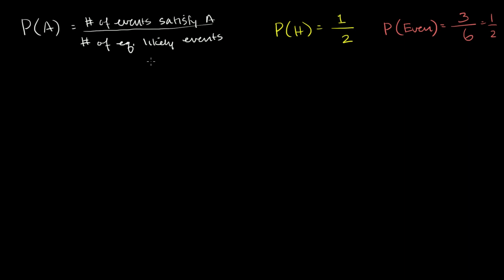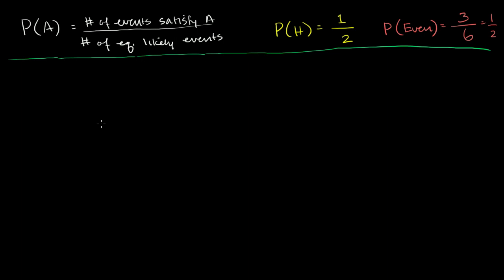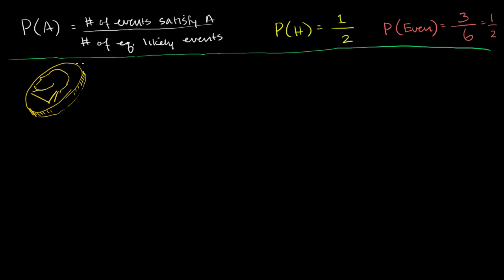Now I'm going to change things up a little bit, because this was just one way of thinking about probability. We're going to introduce another one that's more helpful when we can't think about equally likely events. In particular, I'm going to set up an unfair coin. One side of that coin is a little heavier than the other, even though it's meant to look fair — it still has a picture of a president on one side. So this is the heads side.